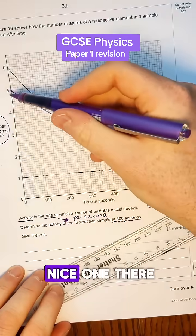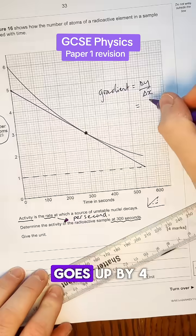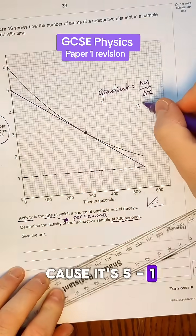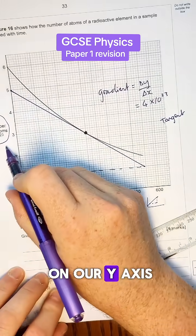Now the gradient is going to be equal to change in y over change in x and the change in y axis that's quite a nice one there. I've just drawn mine so it actually falls quite neatly. If you can do that that's always good. It goes up by four because it's five minus one so it's four and it's times 10 to the power of 23 because that's what else on our y axis.